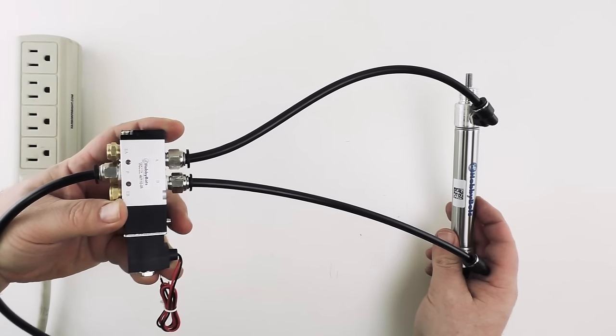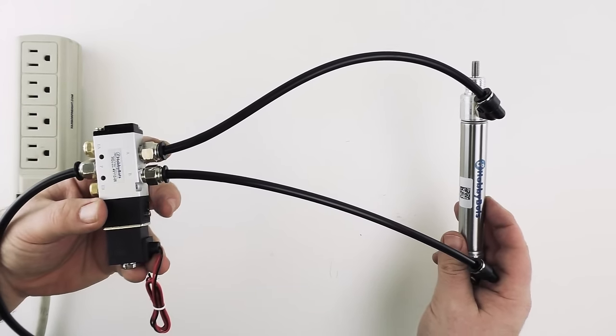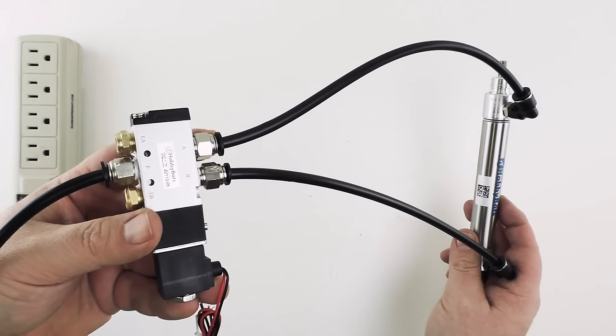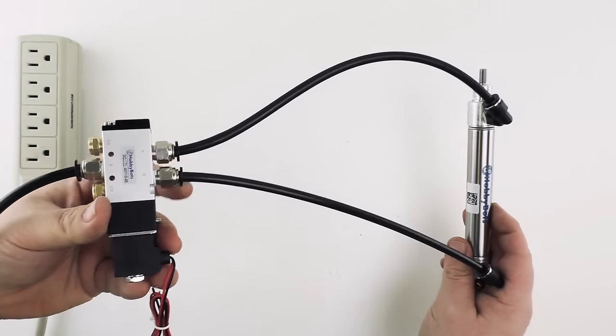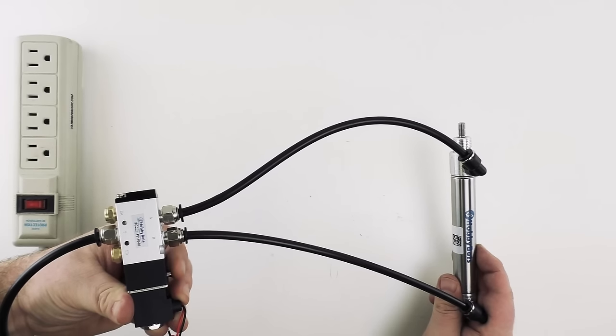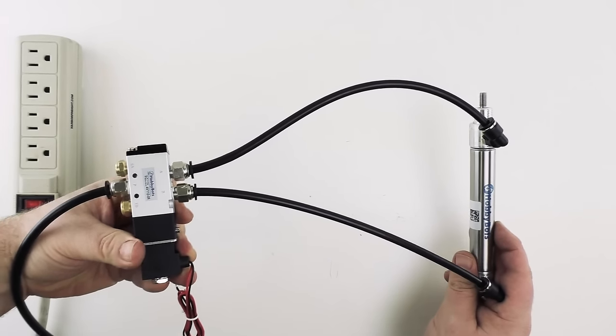We can now test our solenoid to make sure it's operating properly. You can see that there's a small silver button here on the edge of the solenoid. We can go ahead and depress that and it will actuate our cylinder. Alright that's working fine.